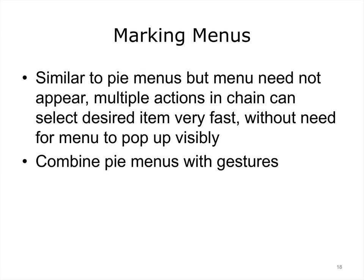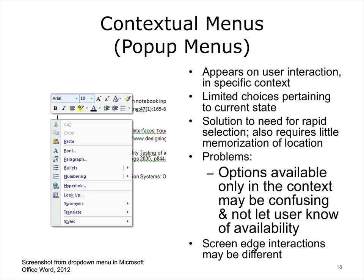Marking menus combine the advantages of pie menus and gestures. Contextual menus are very common, particularly in the Windows operating system. They are launched by a specific user interaction, such as a right click of the mouse, and offer a set of limited choices pertaining to the current state of the system. It is fairly rapid and requires little memorization of item locations. Some applications may only make options available in some contexts, which can cause confusion. Screen edge interactions may differ from those when the object is in the center of the screen.